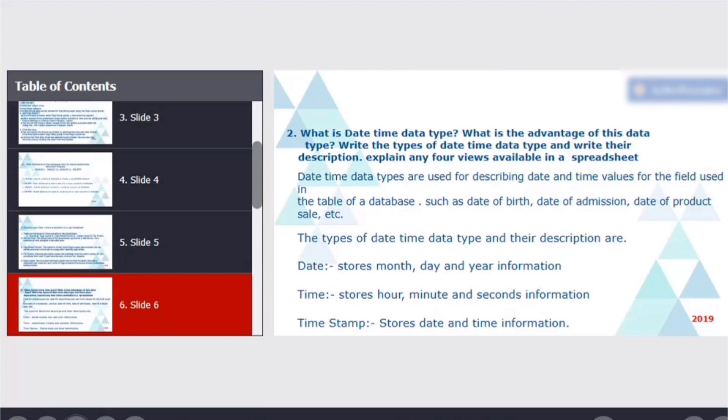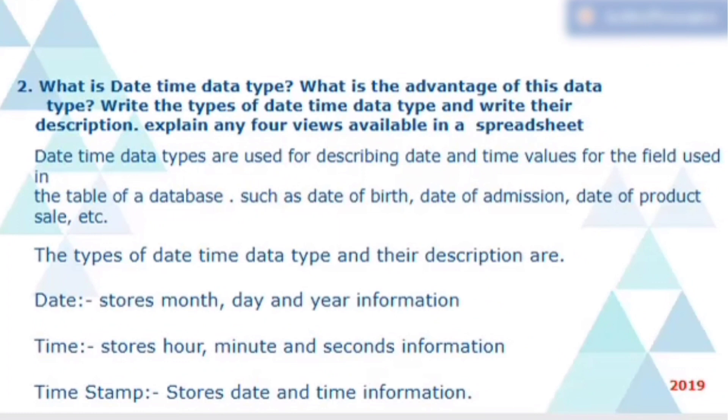Now, moving to the most important question, what is date, time, data type? What is the advantage of this date, time, data type? Write the types of date, time, data type and write their description. The answer is date time data types are used for describing date and time values for the field used in the table of database, such as date of birth, date of admission, date of product sale, etc. The types of date, time data types and their descriptions are as follows. Date stores month, day and year information. Time stores hour, minute and second information. And timestamp stores date and time information, both date and time information.